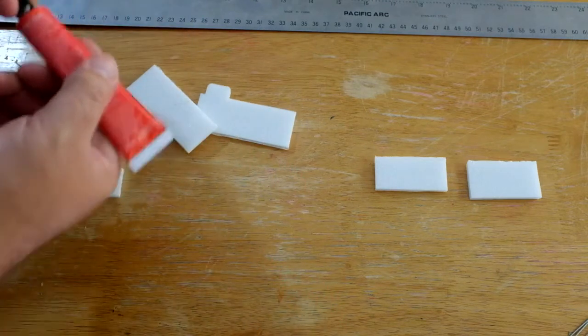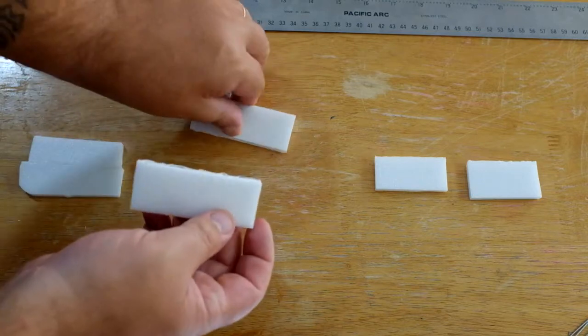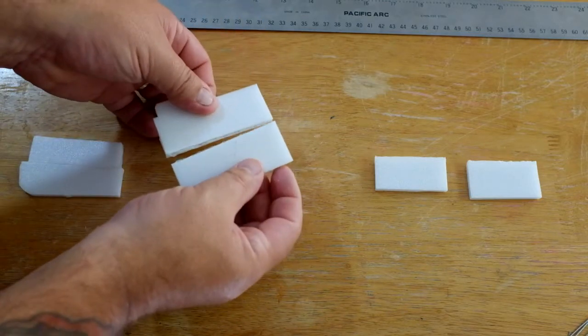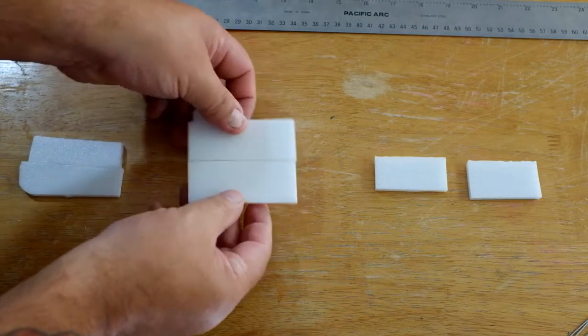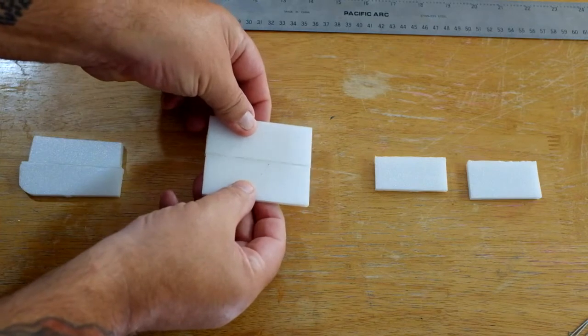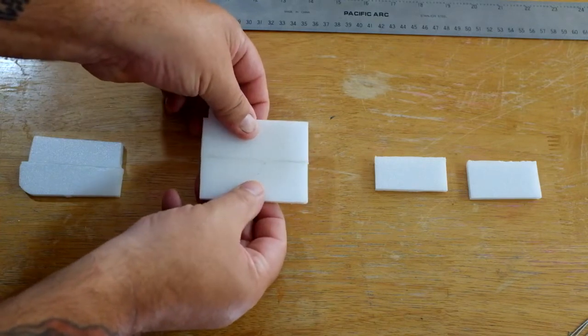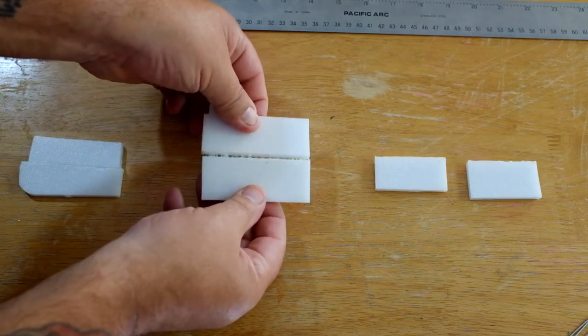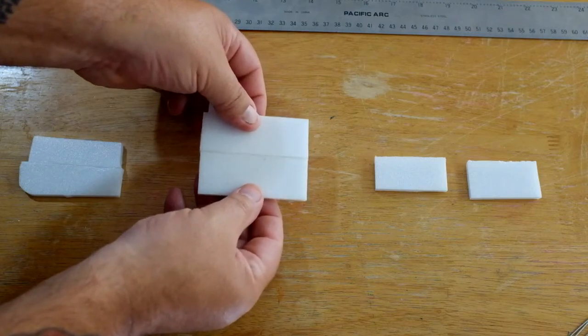Alright, you can wipe off the excess later, but make sure you get enough and you kind of rub it together like this. Get a nice good joint to where it's pressed tight. And then you pull it apart and you see it kind of gets like a spiderweb action there.